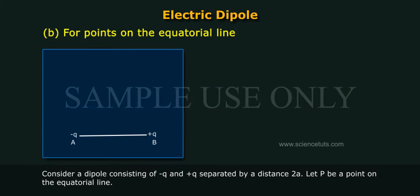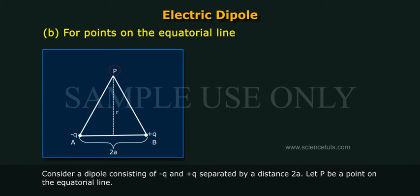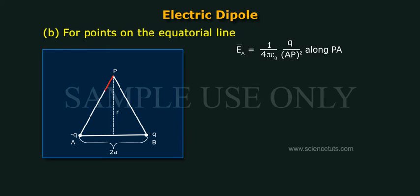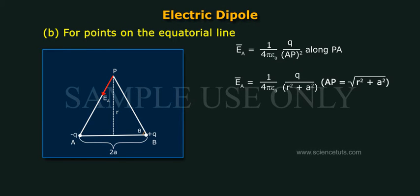Consider a dipole consisting of minus Q and plus Q separated by a distance 2a. Let P be a point on the equatorial line. E_A is equal to 1 by 4 pi epsilon naught times Q by AP squared along PA, which equals 1 by 4 pi epsilon naught times Q by (R squared plus A squared).